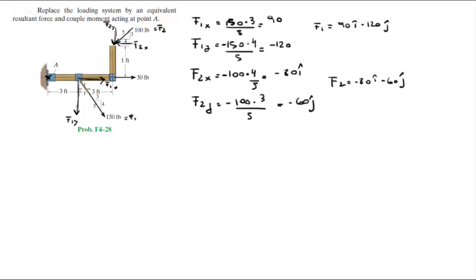Now that we have the X and Y components, let's find the resultant force. Let's call this one F3. F3 is equal to 50 going to the right, so positive 50 in the i. So F of R is equal to F of 1 plus F of 2 plus F of 3.